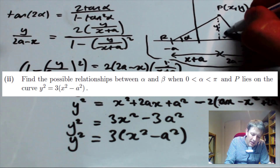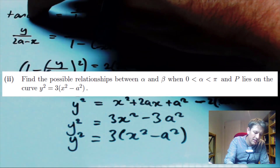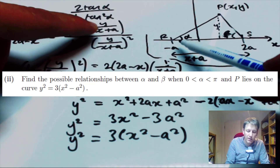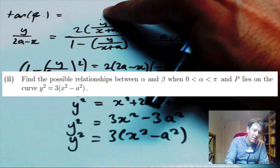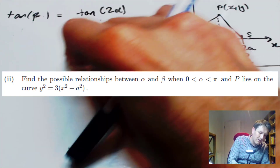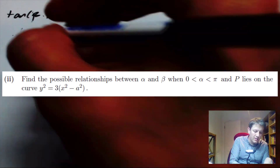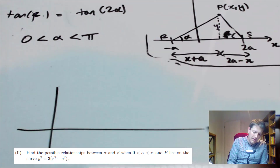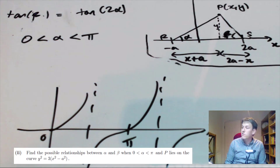In the general case, y over (2a − x) is tan β, while y over (x + a) is still tan α. The formula still represents tan(2α), so we get back to tan β = tan(2α). For full credit, you now need to recognise that this doesn't necessarily mean β = 2α. We're told α is in the range 0 < α < π, so let's draw the graph of tan α between 0 and π/2 quickly.